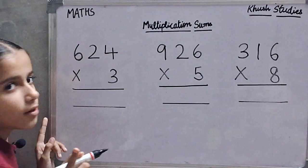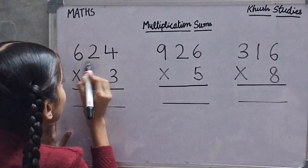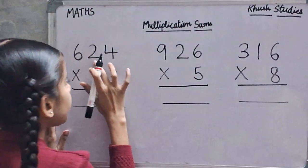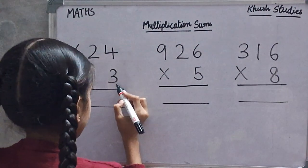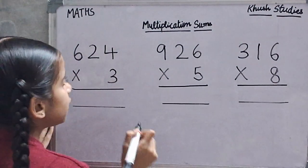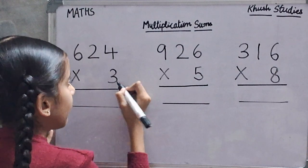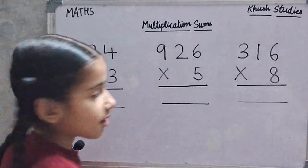First we will multiply 624 multiply by 3. First we will multiply 4 by 3. 4 times 3 is 12.